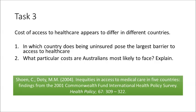Now that you've completed the telehealth task, here is task three. The cost of access to health care is quite different depending on the country. The question is: in which country does being uninsured pose the largest barrier to access to health care? And what particular costs are Australians most likely to face? The journal article by Shohan and Doty, entitled 'Inequities in Access to Medical Care in Five Countries,' will assist you with answering these questions. Please read the paper and then formulate your answers.